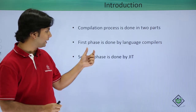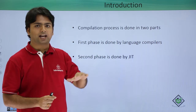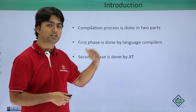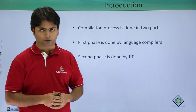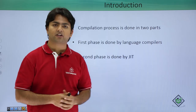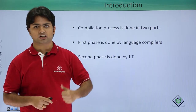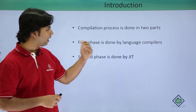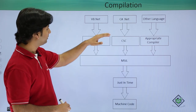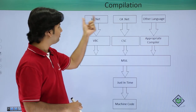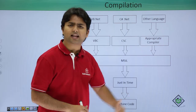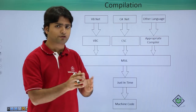In the first step, the particular language is compiled by the language compiler and taken to an intermediate language. In the second phase, the compilation is done by the JIT, that is Just In Time compiler. Here in this example, I have taken code written in VB.NET or C-Sharp .NET or any other language supported by .NET Framework.